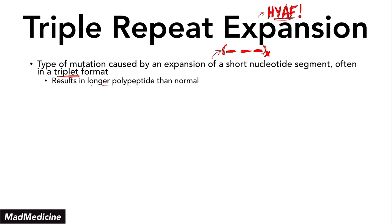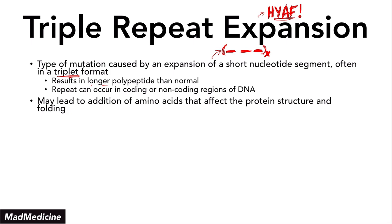Now, depending on where the repeat is, it can occur in both the coding or the non-coding regions of DNA. It is very variable — it can really happen at any point in the DNA. Depending on how the codon is affected, especially if it's in the coding or non-coding region, you may have addition of amino acids that affect the protein structure, especially the folding. And when you affect the folding, you will also affect the overall function of that protein.